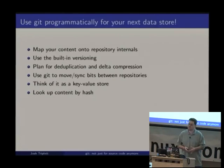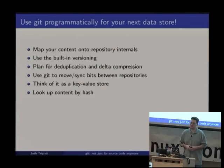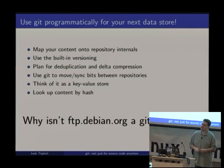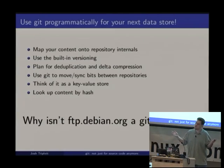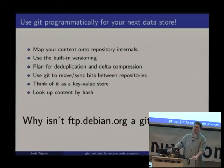To revisit one last time the reasons you might want to use Git programmatically: map your content onto repository internals; remember to use the built-in versioning for some useful purpose; store your data in a way that works well with deduplication and delta compression; use Git when you want to move and sync bits between repositories; think of it as a giant key-value store; and try to look up content by hash whenever possible. And a bit of controversy: why is ftp.debian.org not a Git repository? Store all source and binaries there, use that as your syncing protocol, deduplicate the data, and use it to install packages.